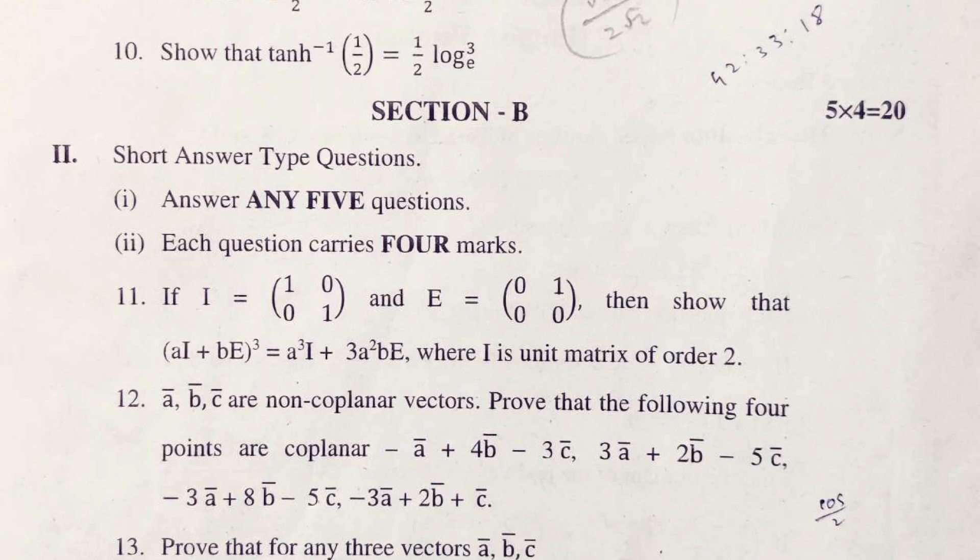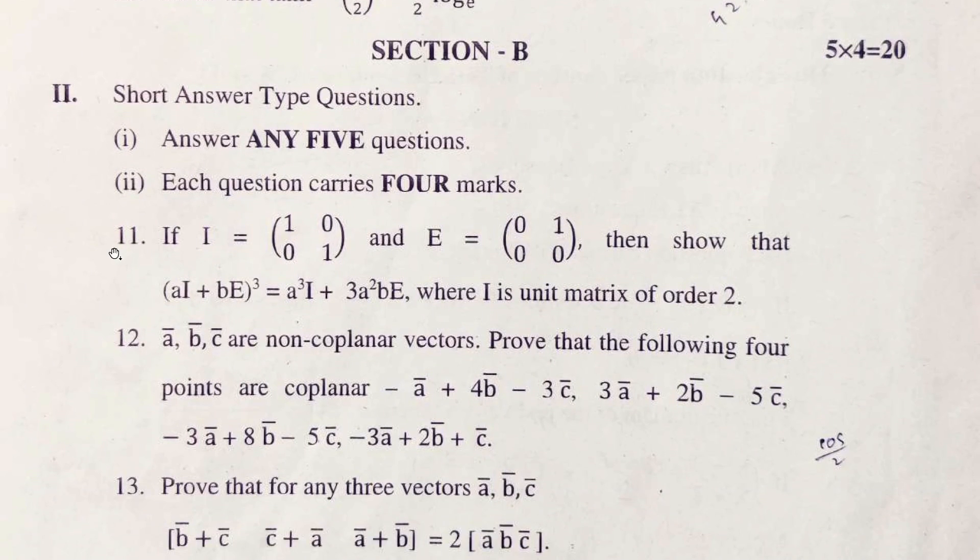In Section B, seven questions were given, out of which five questions need to be answered.